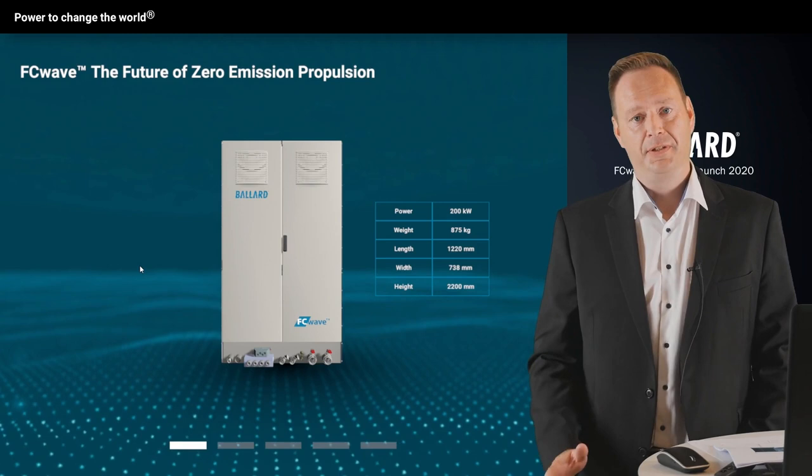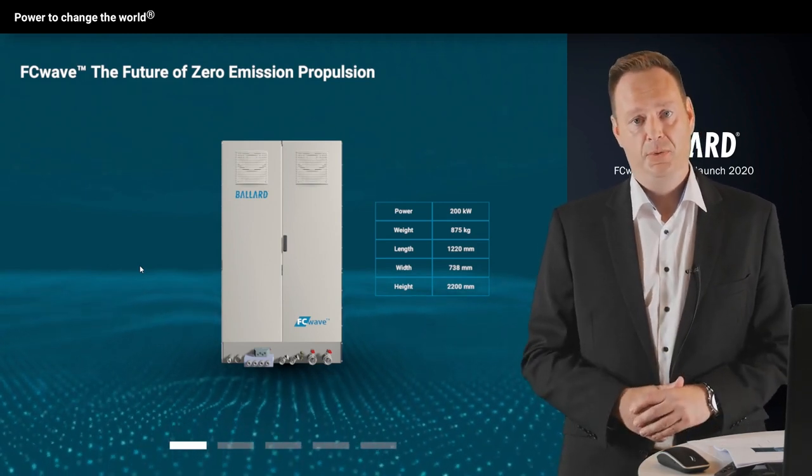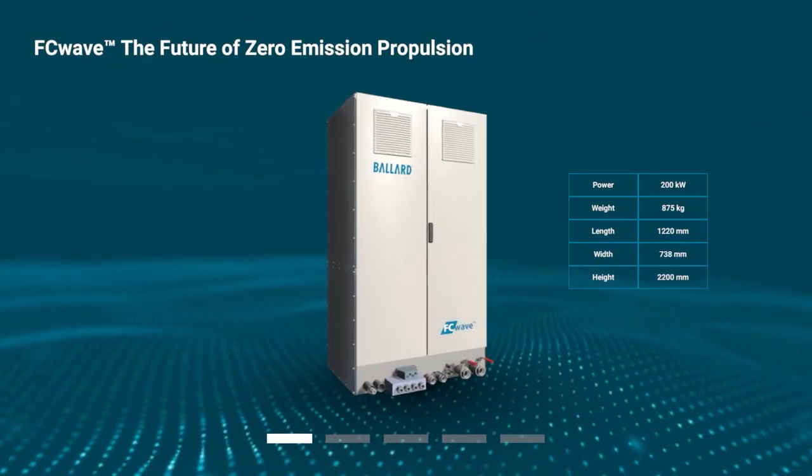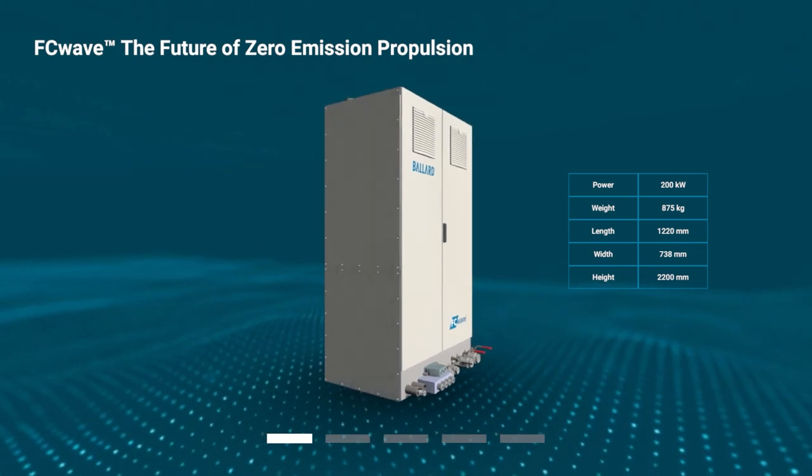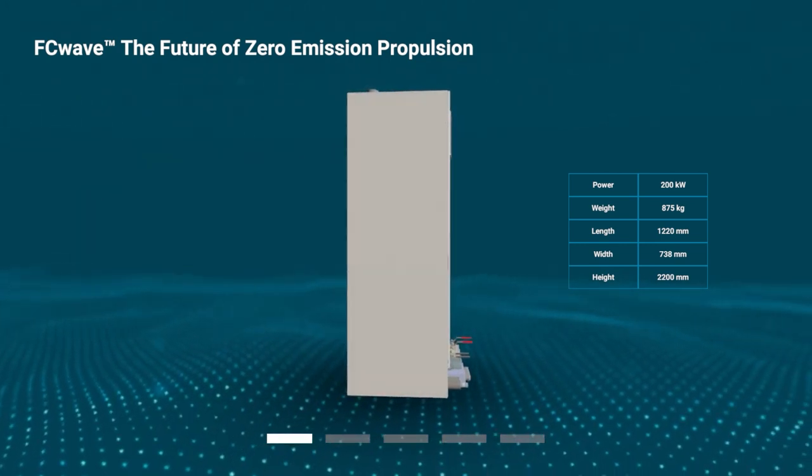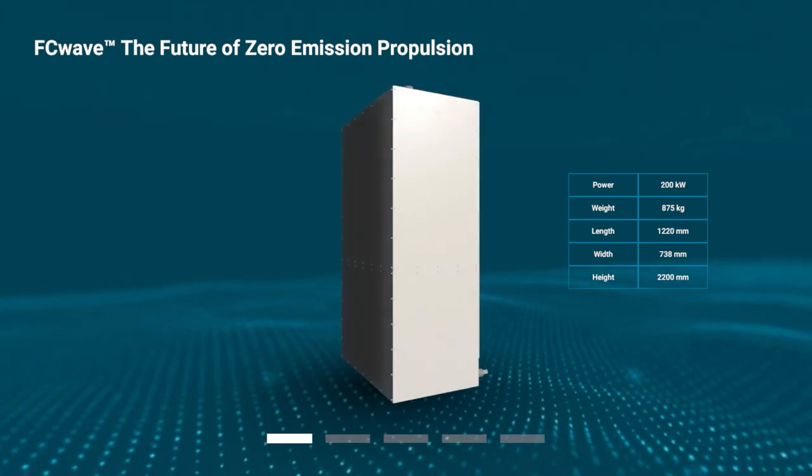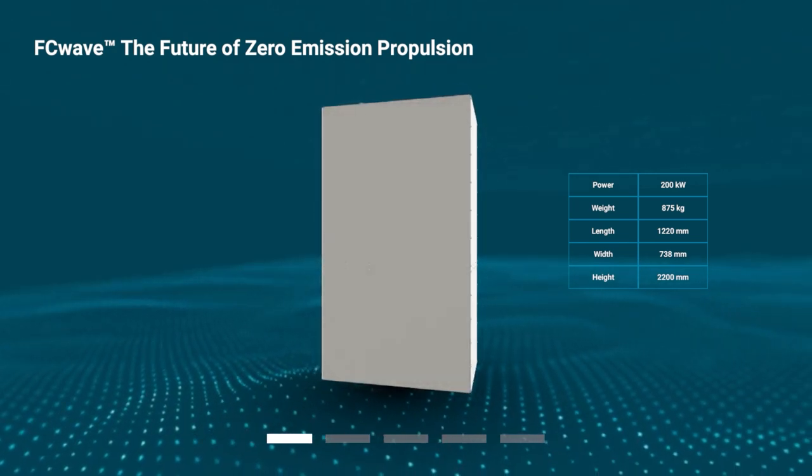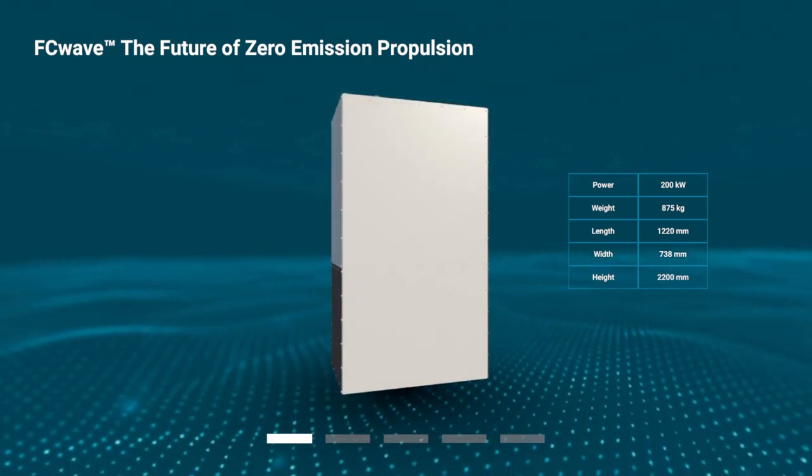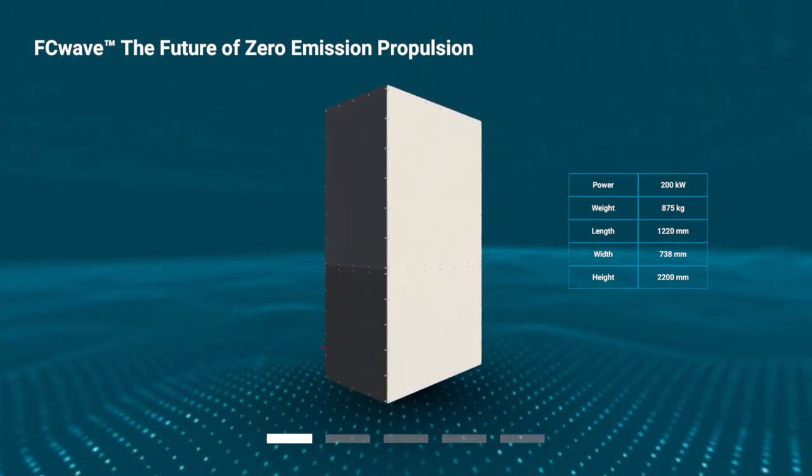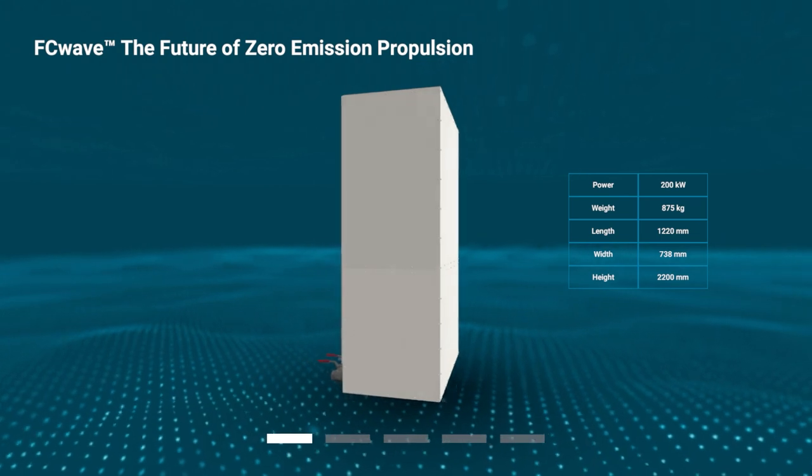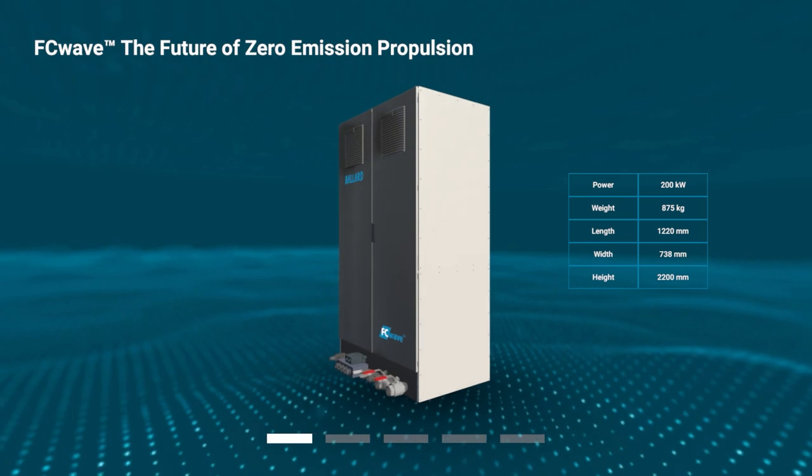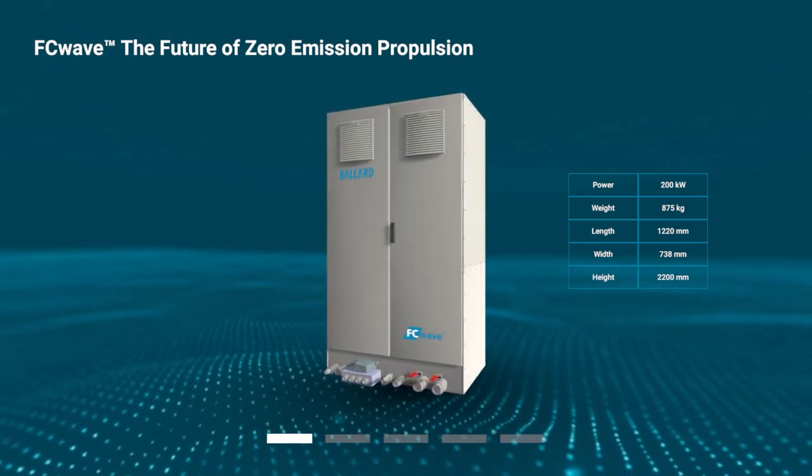Thank you very much. What a nice video. Now let's have a deeper look into the FCWave module. FCWave is built on proven components from Ballard's heavy-duty module portfolio to deliver reliable performance, high power density and favorable economics. Its size and weight is minimized to making the product easy to integrate in different types of vessels. We've chosen to focus on five key aspects: Safety, Stack Technology, Ease of Integration, Serviceability and Modular Design.